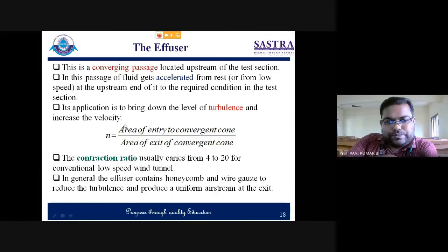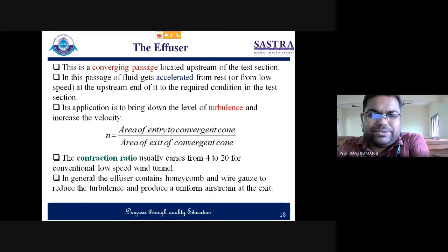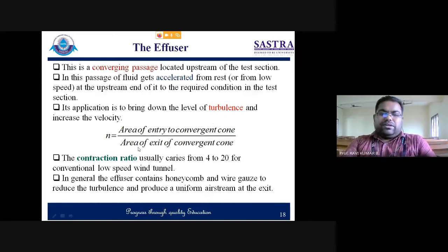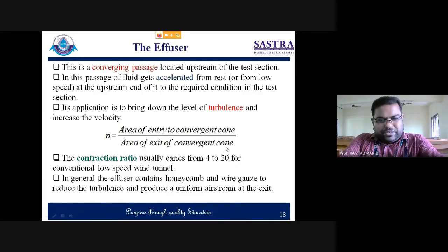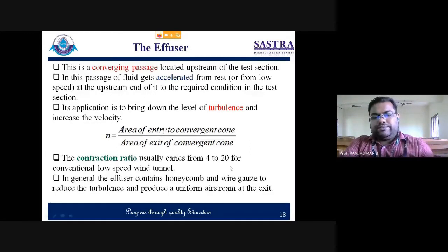The convergent section will also reduce turbulence. As flow enters, because of boundary layer formation some circulatory flow may be enhanced, but the turbulence strength will be reduced based on the area ratio. The magnitude of turbulence will decrease as you change the area ratio at inlet to exit of the convergent section — this is called the contraction ratio. Contraction ratio is the area at entry divided by the area at exit of the convergent section, and for low speed wind tunnels this ratio will typically be in the range of 4 to 20.